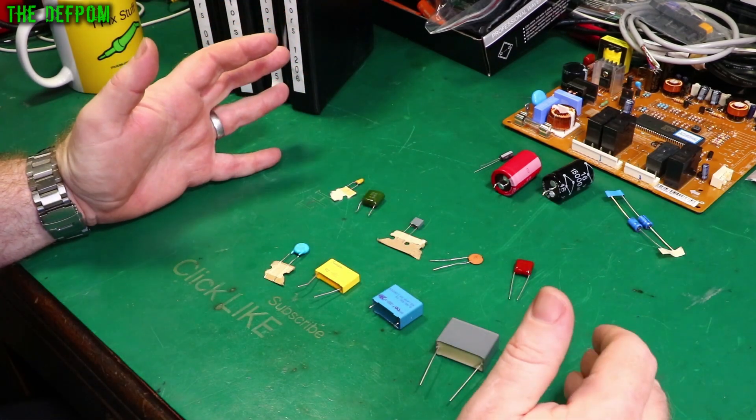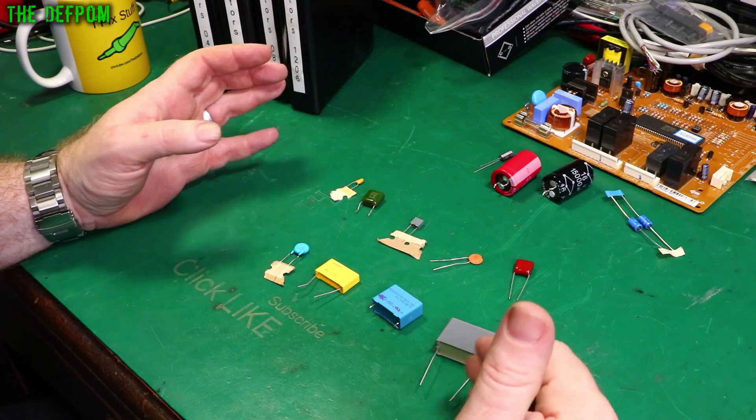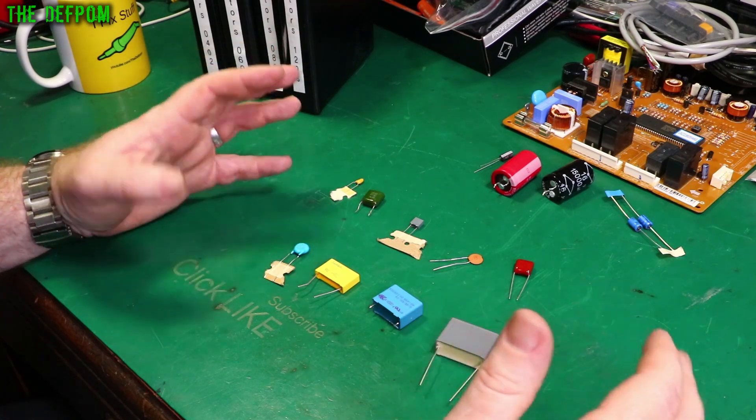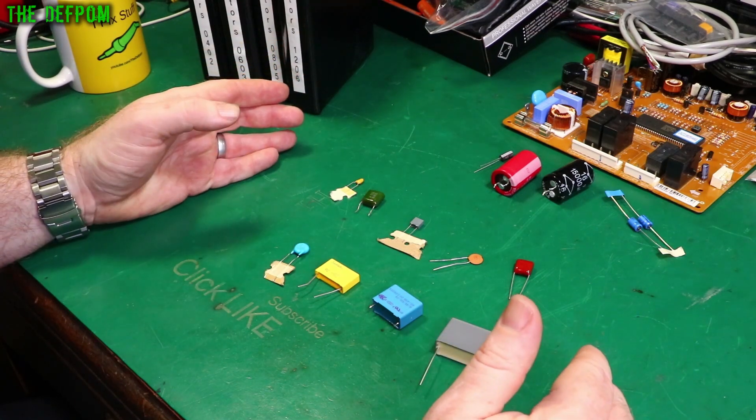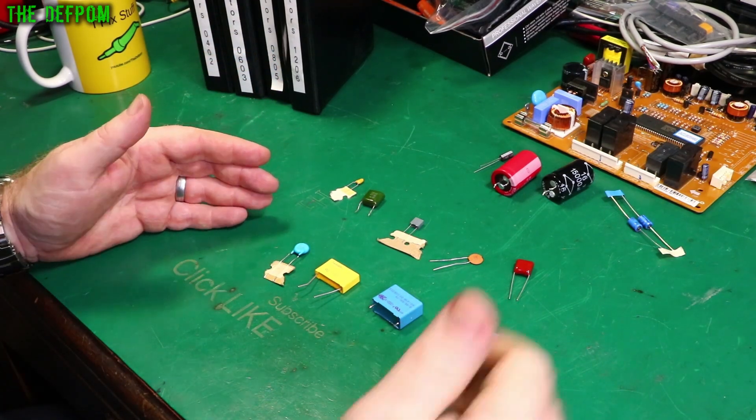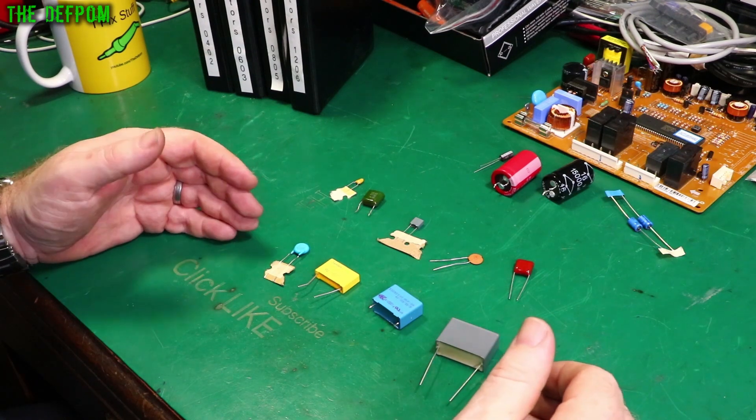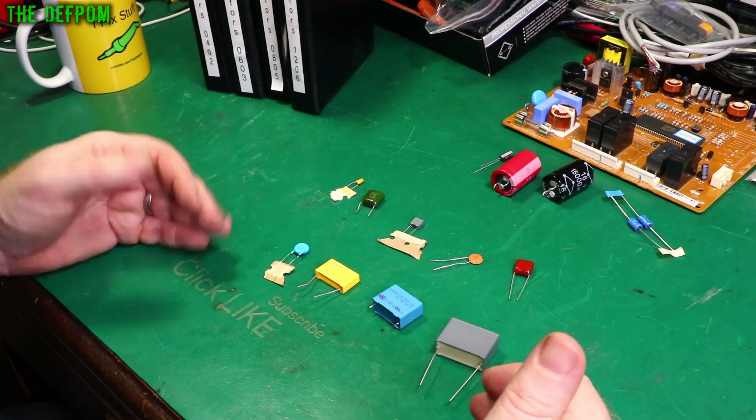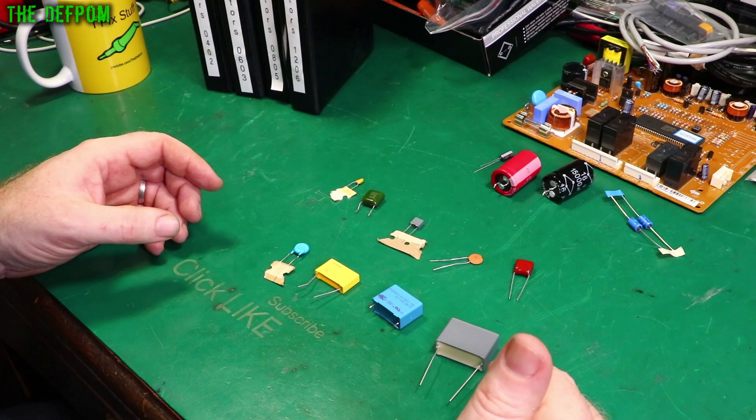I'm going to cover the mains ones first because this is quite an important aspect of mains capacitors. There's X class and Y class capacitors. These are used for EMI suppression across the mains, line to ground sort of stuff to filter noise from equipment and to equipment on the AC mains cable.